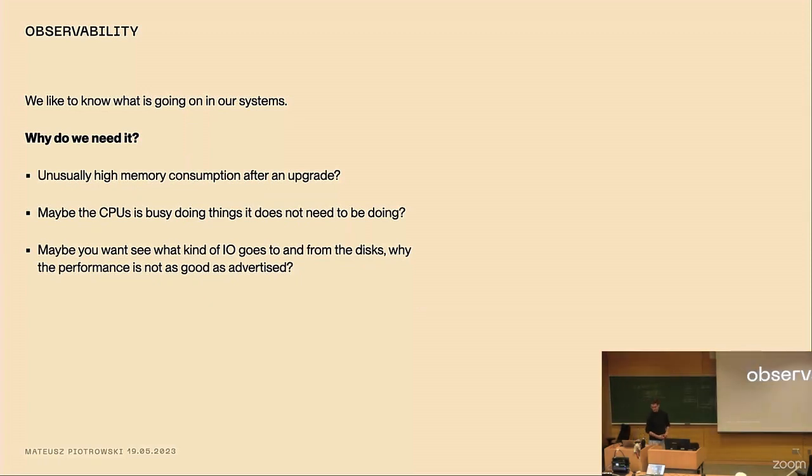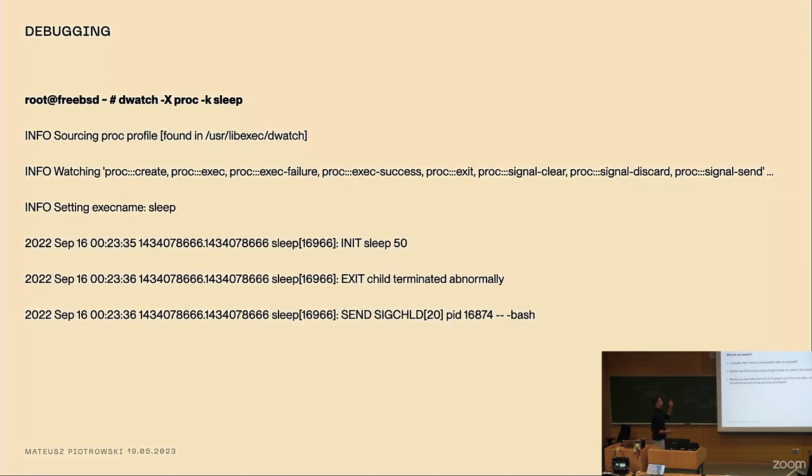So let's talk about observability. In general we like to know what's happening in our systems. Usually we have a good idea of more or less what's happening there, but then we upgrade our systems and have unusually high memory consumption, or our CPUs are busy computing something we didn't mean to have running, or there's some weird kind of IO that's destroying performance. In all of those cases, we want to understand what's happening in our systems and that's where observability comes into play.